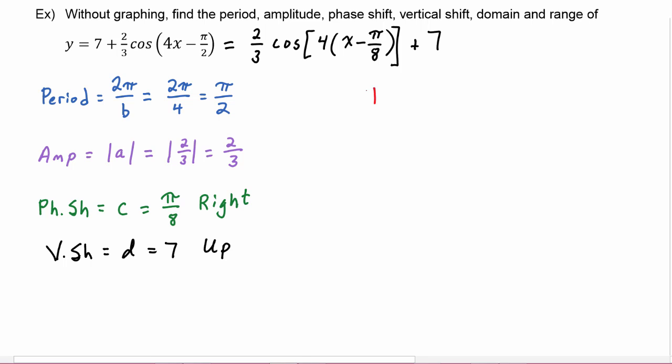Now the domain, it is a cosine. And we know cosine goes forever in the positive direction and forever in the negative direction. So the domain is going to be negative infinity to positive infinity.